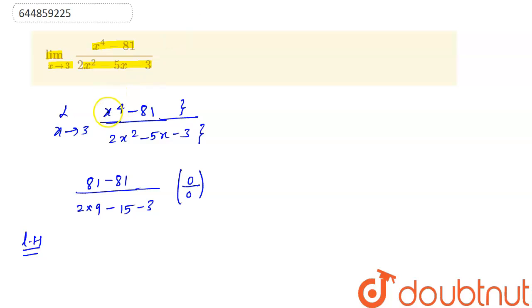So here we will differentiate numerator and denominator. It will become limit x tends to 3, and differentiation of numerator will be 4x^3, upon, in the denominator we will have 2·2x - 5.